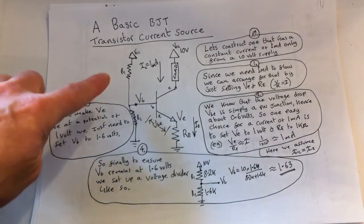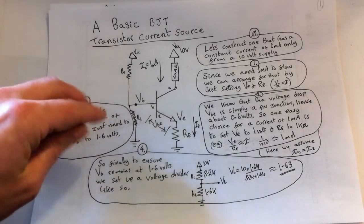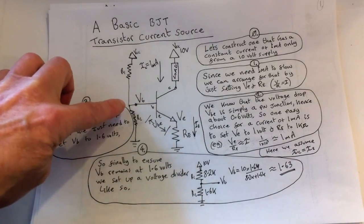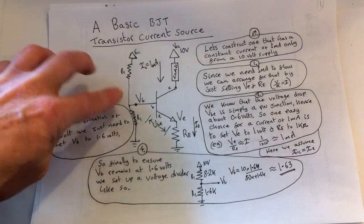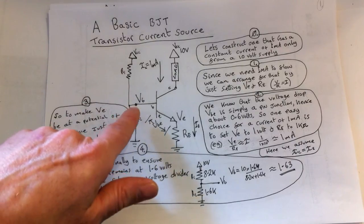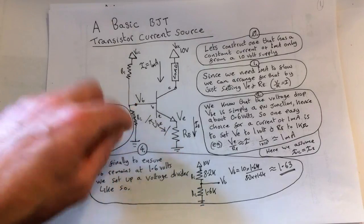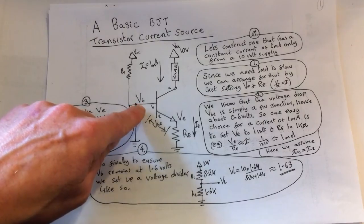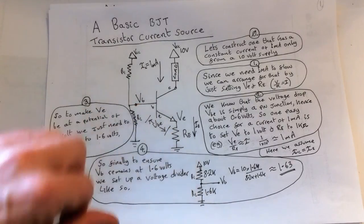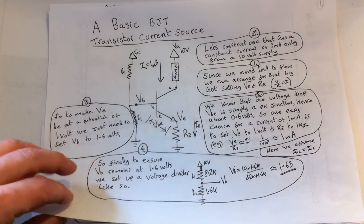But in fact, it turns out that to make things easy when you actually do the lab, I've just used a potentiometer here—a 10k potentiometer—and I will use the multimeter to turn the potentiometer and make sure that we've got 1.6 volts here. So that's basically an easier way.